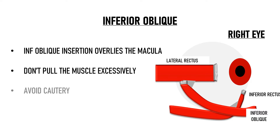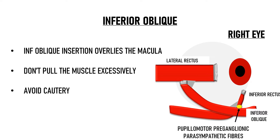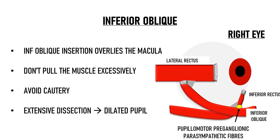Any cautery over the macula area should also be avoided. The pupillomotor preganglionic parasympathetic fibers that innervate the sphincter pupillae muscle of the iris lie very close to the inferior oblique at the point where it crosses the inferior rectus. These fibers are responsible for pupillary constriction, so over-enthusiastic surgical exploration here can injure them and result in a dilated pupil. The inferior oblique is connected to the lateral rectus by the intermuscular septum and to the inferior rectus at the Lockwood ligament.